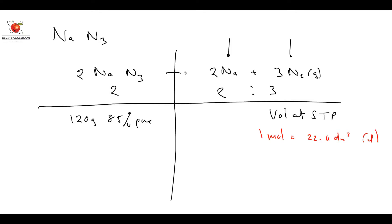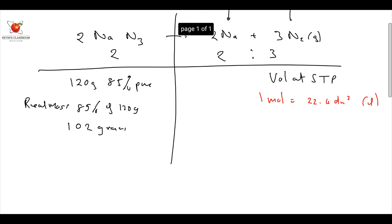Now they tell us that it's 85% pure. So therefore, what is the real mass that decomposed? It's 85% of 120 grams. So the real mass is going to be equal to 102 grams was actually pure NaN3 that was going to decompose.